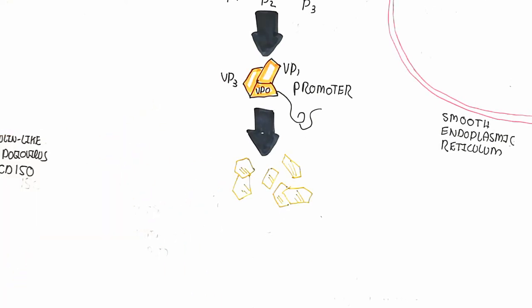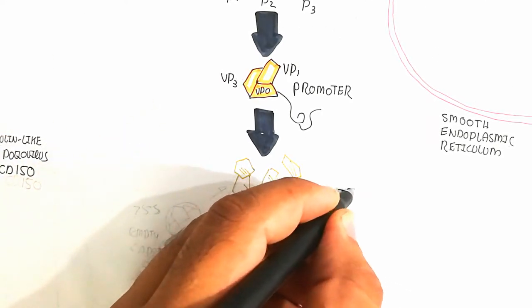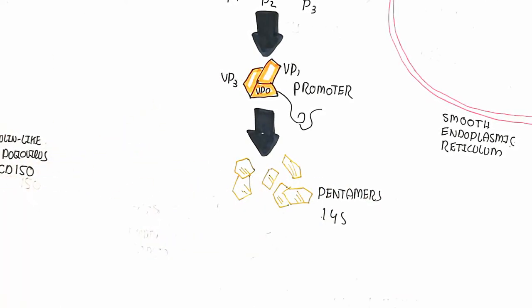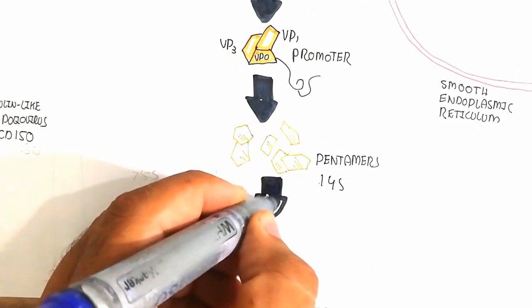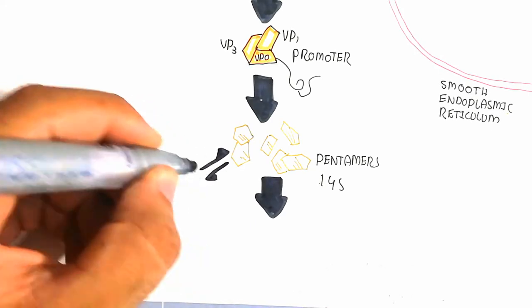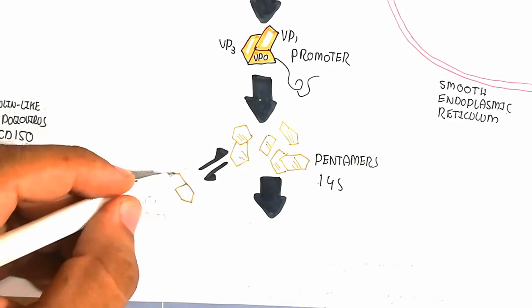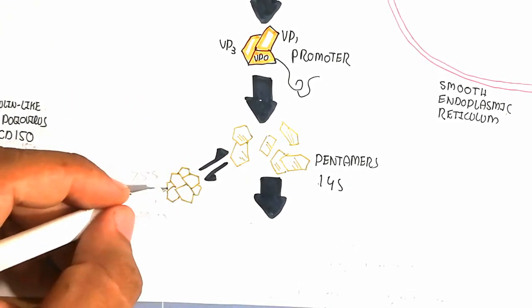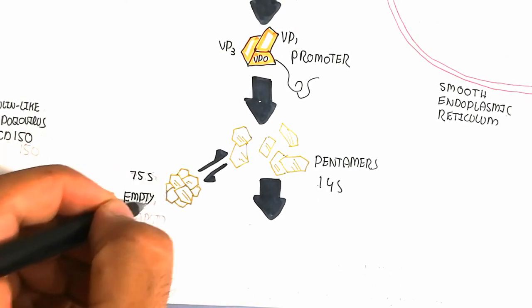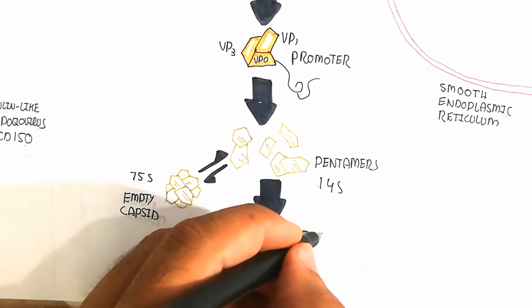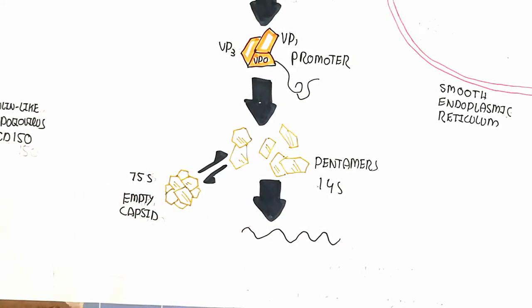This empty capsid should take the RNA. RNA encapsidation will occur, so the capsid will be surrounded, will surround the RNA. So this is the provirion, the non-infectious 150S.